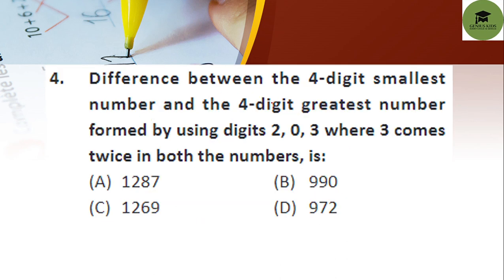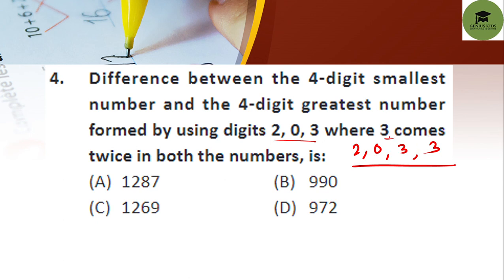Question 4: find the difference between the 4-digit smallest number and the 4-digit greatest number formed using digits 2, 0, 3 where 3 comes twice in both numbers. The available digits are 2, 0, 3, 3. The greatest 4-digit number formed is 3,320 and the smallest is 2,033.